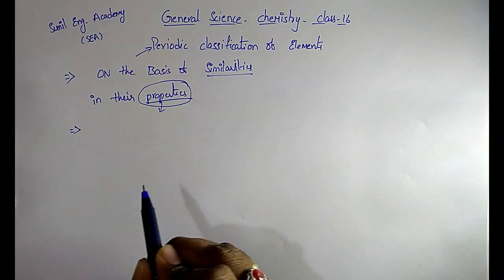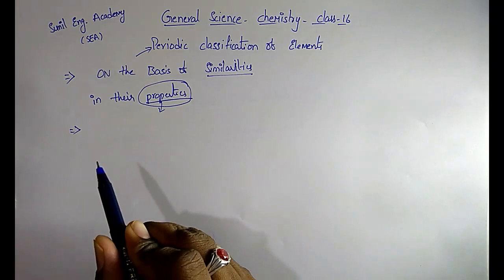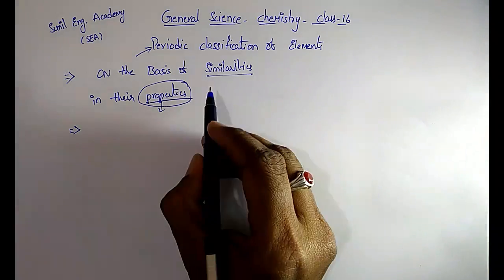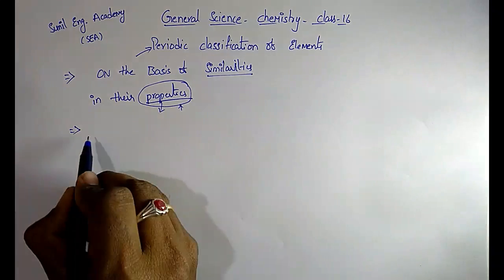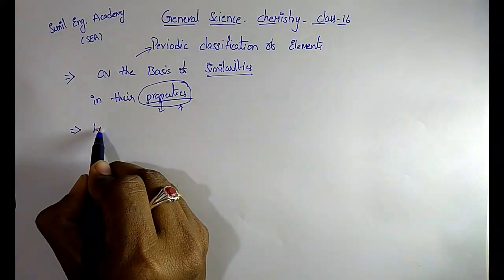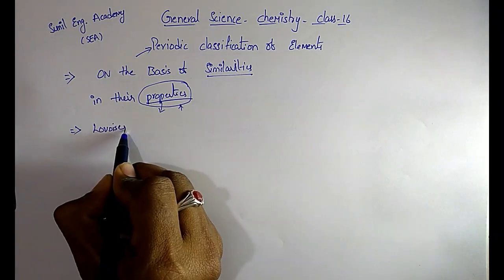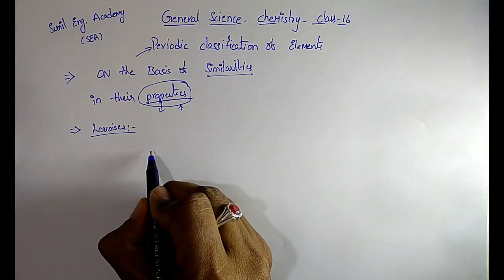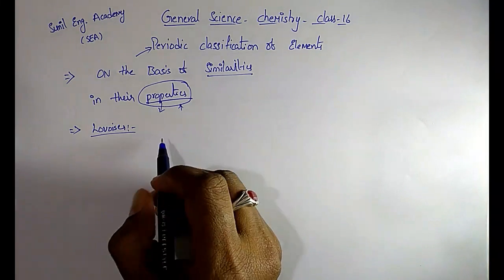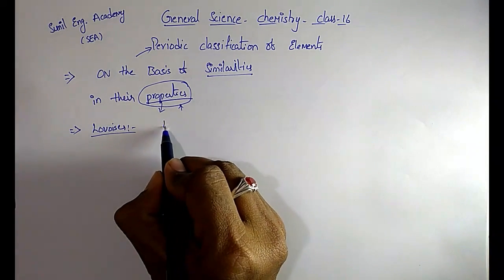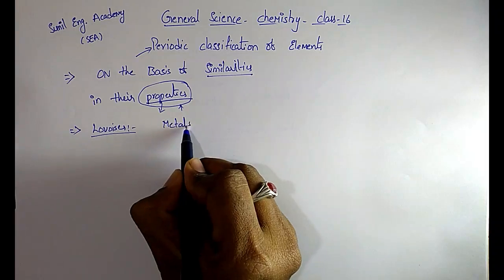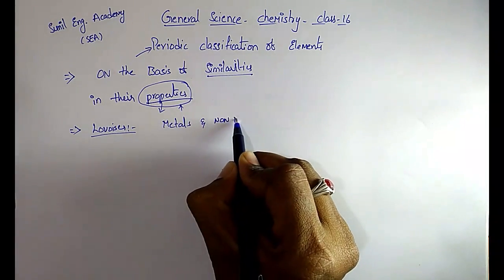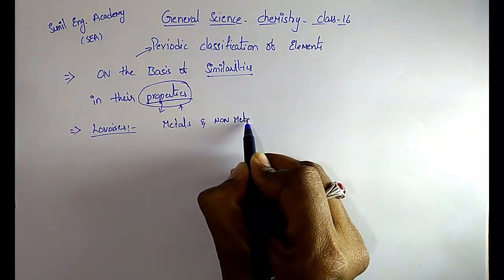Scientists made several attempts to classify these elements according to their properties. The first scientist is Lavoisier. He classified the elements into metals and non-metals.